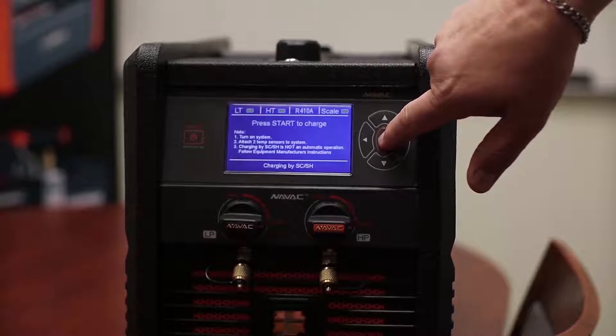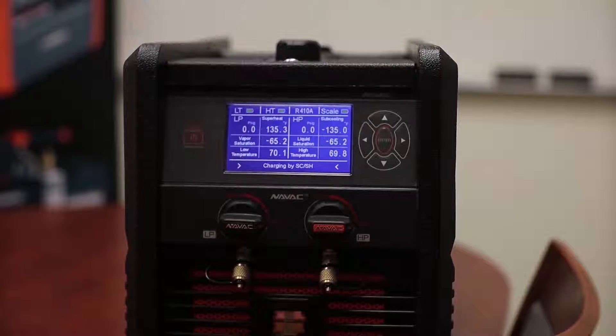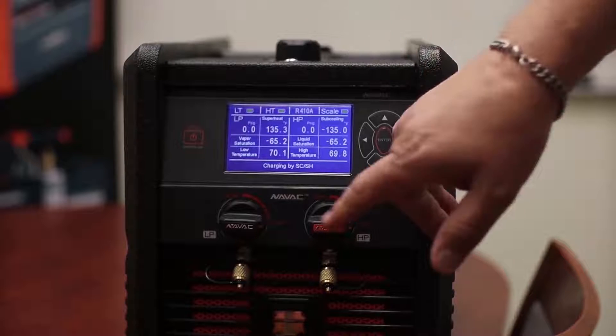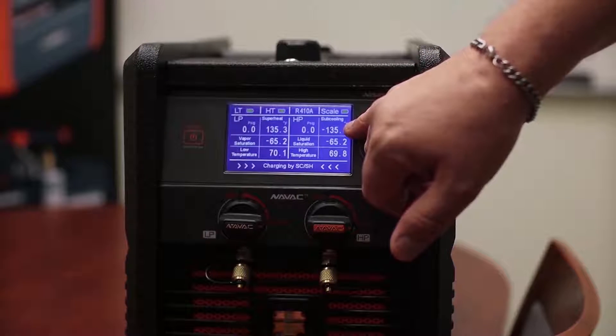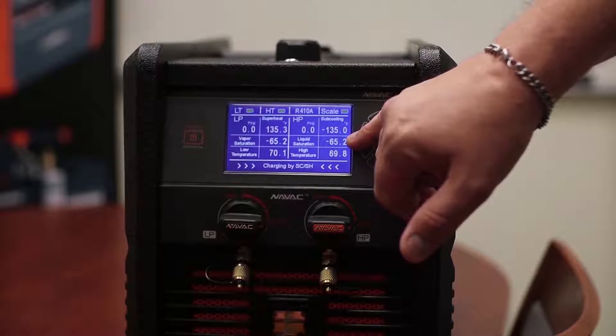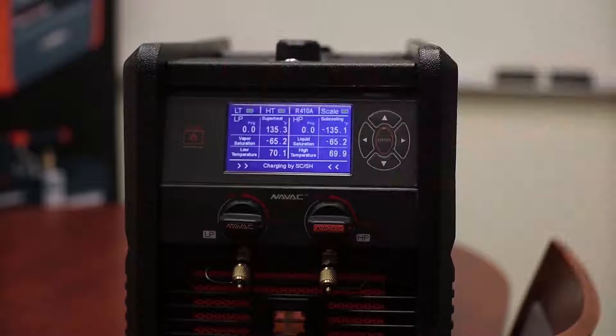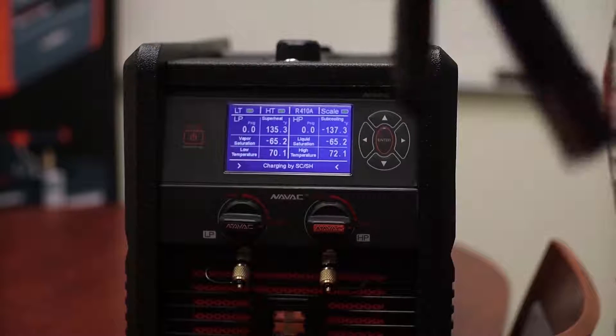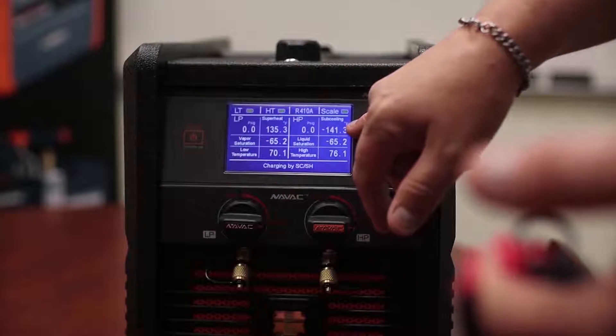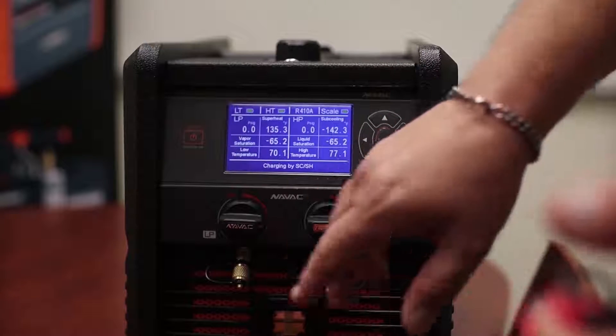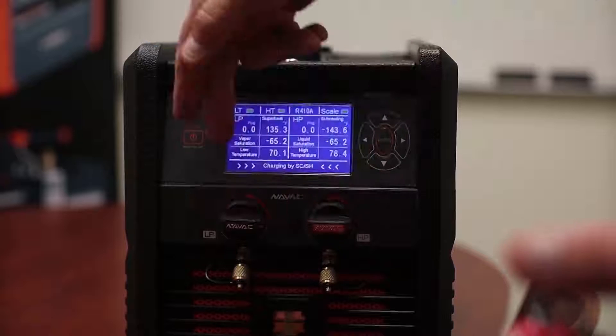This will now become your digital scale. So now that we're ready to charge by superheat subcooling, we're showing our scale, our subcooling, our pressures. Of course, I'm not connected to a system right now. Our liquid saturation, our high temperature. So I will go ahead and warm the temperature probe up until the blood stops flowing to the end of my finger. So as our temperature is going up, it's adjusting our subcooling.